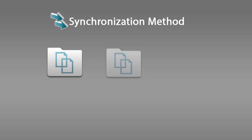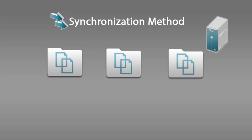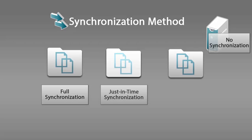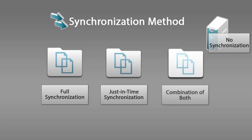Suppose you have three Netfolders associated with a single Netfolder server. The synchronization method does not have to be the same for each Netfolder. It might make sense to not synchronize the Netfolder server and implement full synchronization on one Netfolder, just-in-time synchronization on another, and perhaps both methods simultaneously for another.